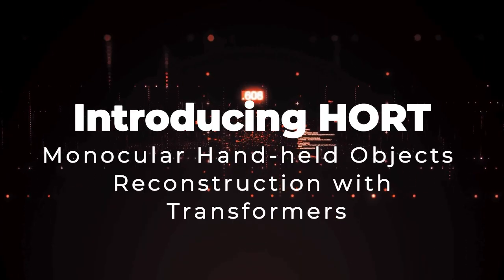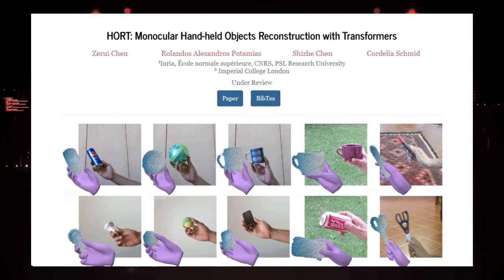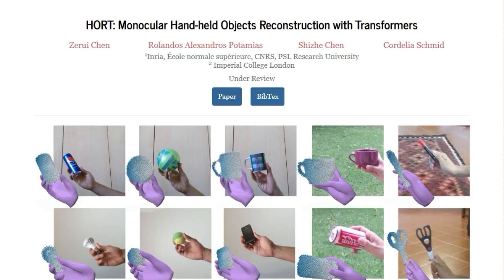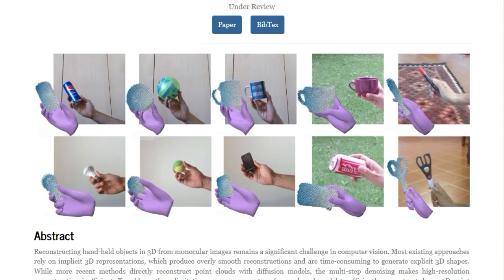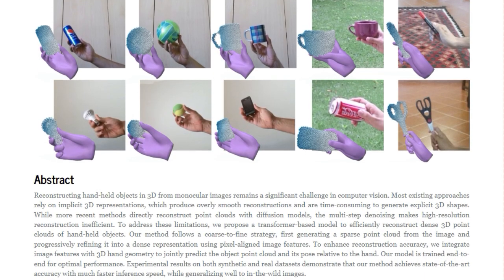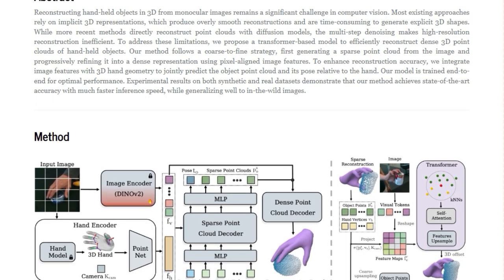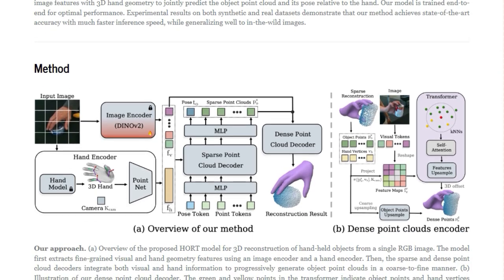Paper number 9: Introducing HORT — Monocular Handheld Objects Reconstruction with Transformers. We're checking out a really cool paper called HORT, and what makes this work particularly innovative is its fresh take on reconstructing 3D objects you're holding, all from a single image. What sets HORT apart from many existing methods is its use of a transformer-based model — instead of relying on older techniques or the more recent but sometimes slow diffusion models, HORT leverages the power of transformers to efficiently generate dense 3D point clouds. Another key differentiator is its clever coarse-to-fine strategy: HORT first creates a basic sparse point cloud and then progressively refines it into a high-resolution 3D shape.